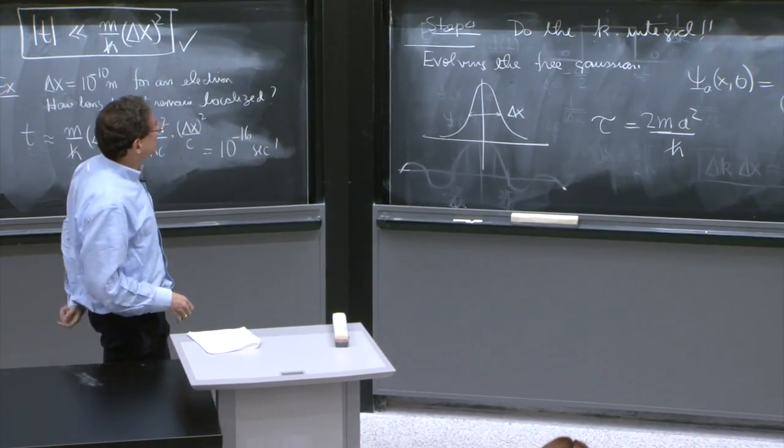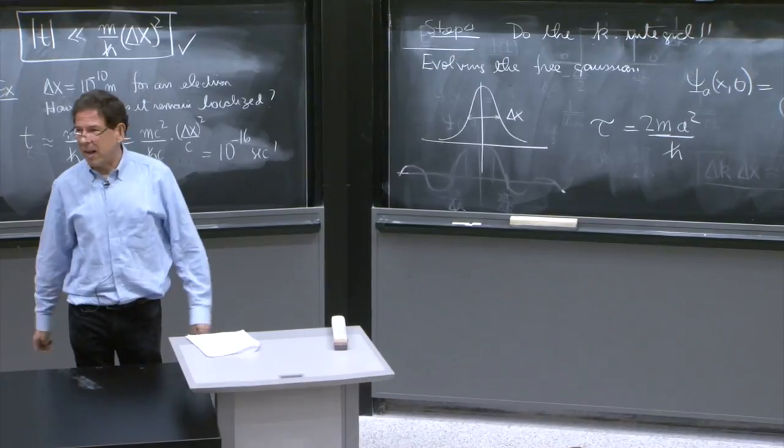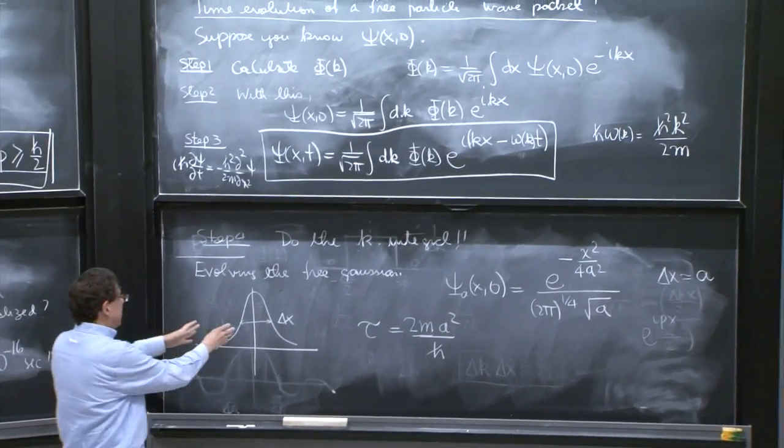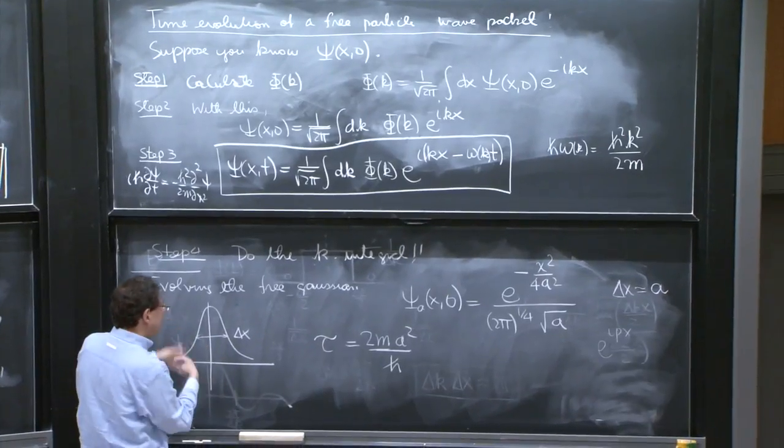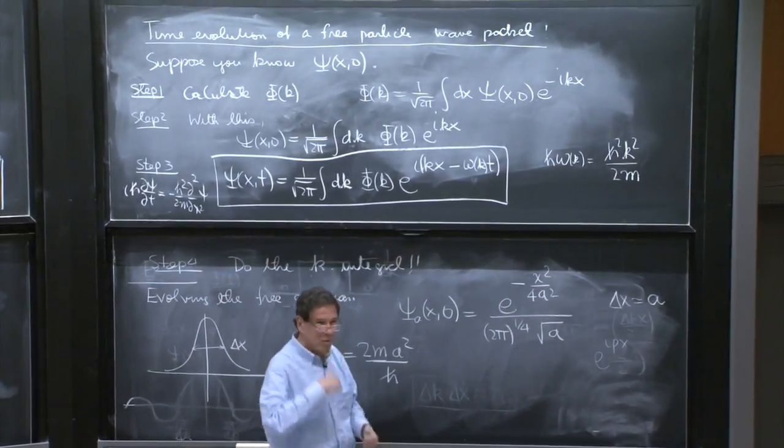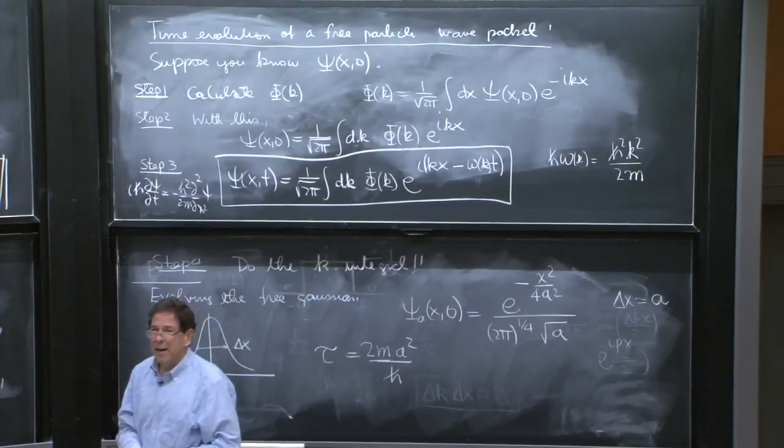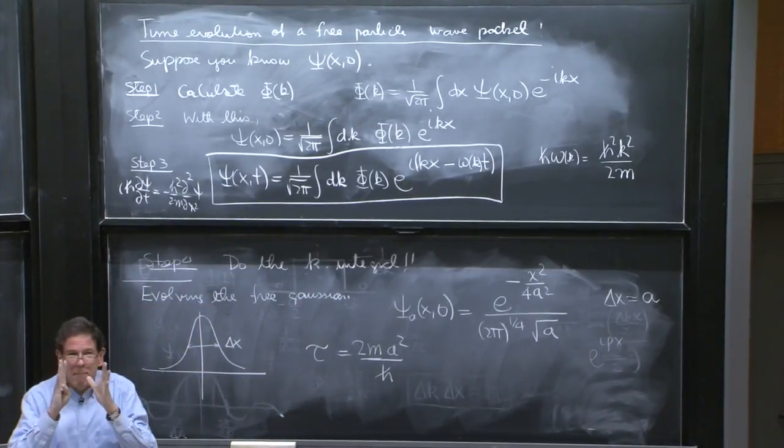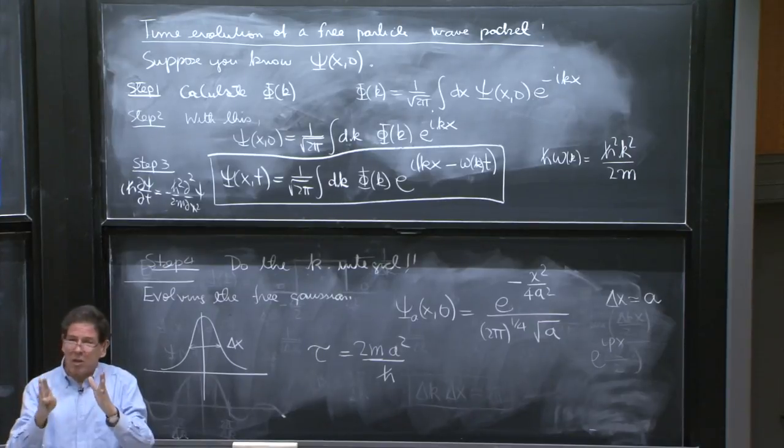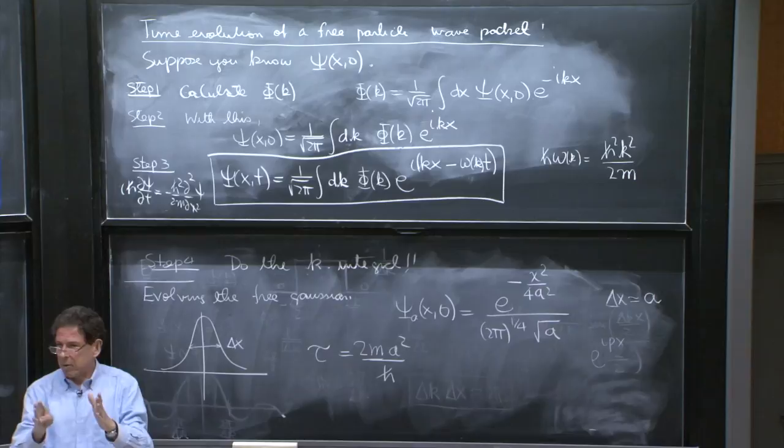So you will do those four steps. They're all doable for Gaussians. You'll find the Fourier transform, which is another Gaussian. Then you will put the right things and then try to do the integral back. The answer is a bit messy for ψ but not messy for ψ², which is what we typically ask you to find.